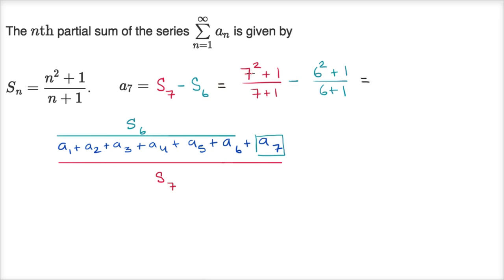And from here, we just have to do a little bit of arithmetic. This is going to be, seven squared plus one, this is 49 plus one, so that is 50 over eight. And this is six squared plus one, that is 36 plus one, that's 37 over seven. We want to find a common denominator between eight and seven. That would be 56. So this is going to be something over 56 minus something else over 56.